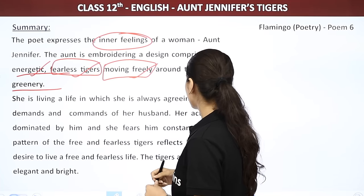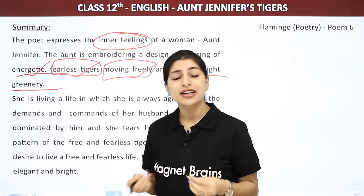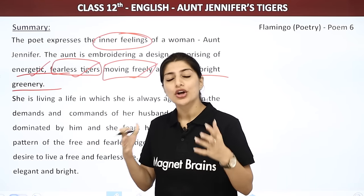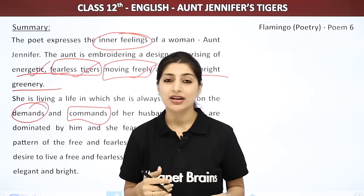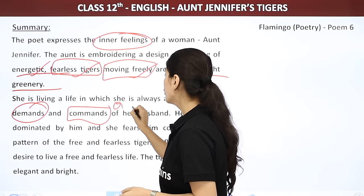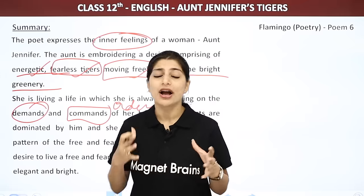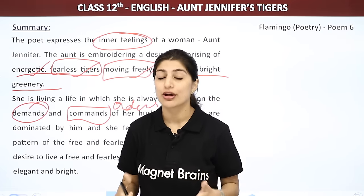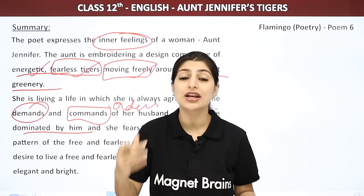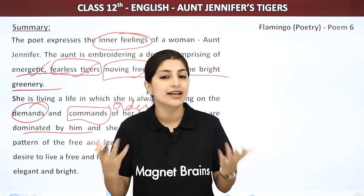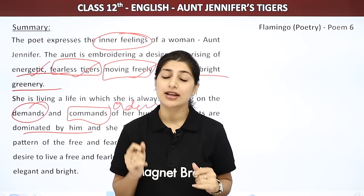She is living a life in which she is always agreeing on the demands and commands of her husband. Aunt ne aisi zindagi jiri hai jismein unke paas koi choice nahi, unhe apne husband ki har baat maanni padti hai, unke husband jo bhi demand karte ya orders dete hain woh sab unhe maanna hi padta hai. Her acts are dominated by him and she fears him constantly. Uncle uski inner feelings ko bahar nahi aane dete — wohi karti hai jaisa uncle order dete hain, aur continuously woh unse darti rehti hain.